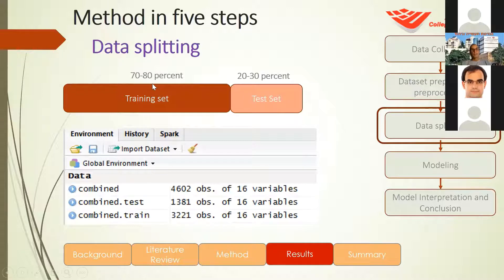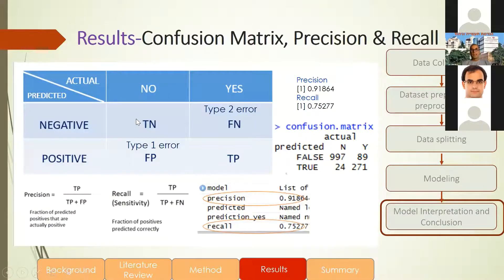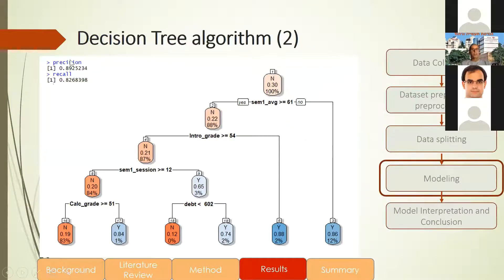We split the data into 70% training set and 30% test data, and used a decision tree to analyze it. Our measures were precision and recall. Our tree algorithm shows a very high precision of 89% and a high recall of 82%, which means this tree is very reliable. Using this tree, we can predict almost 17% of the dropouts from school — that's more than half of the total dropouts — after only the first semester of the first year.